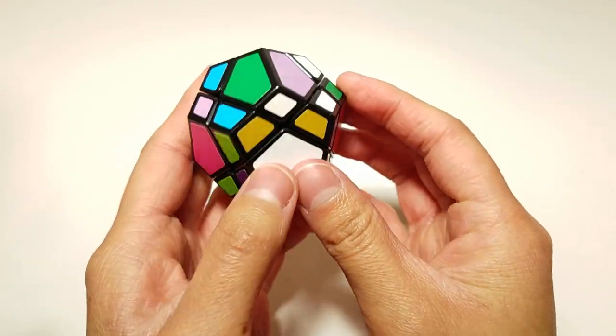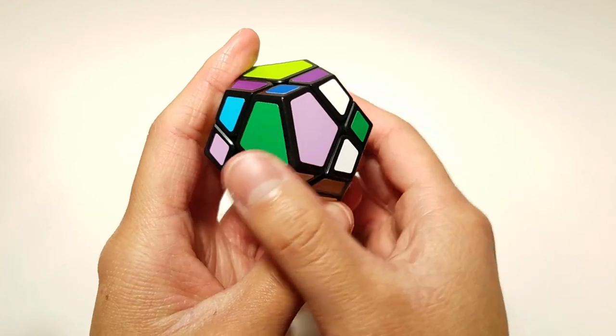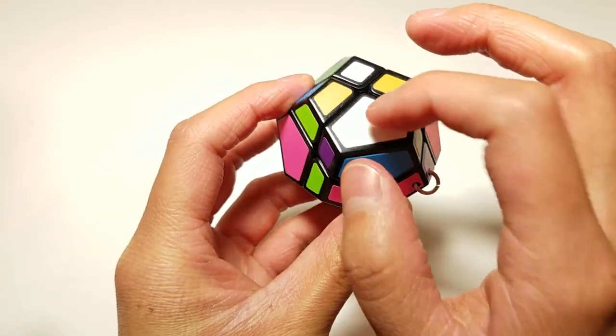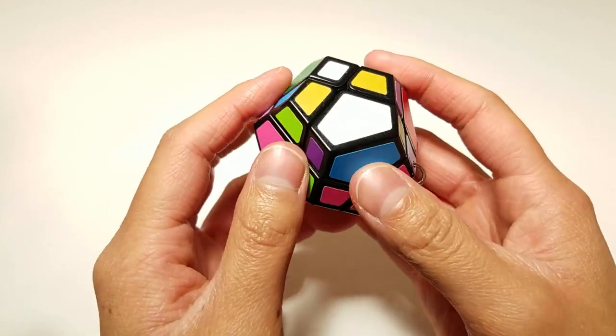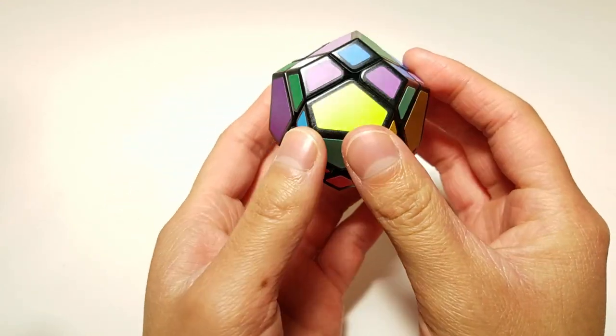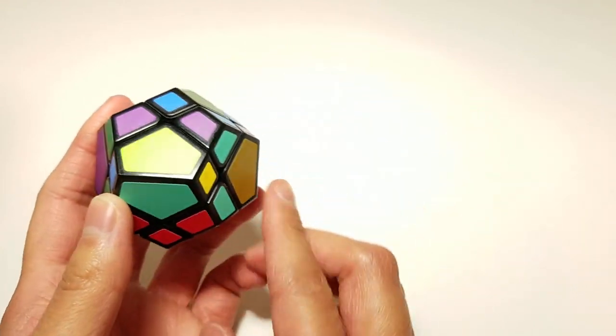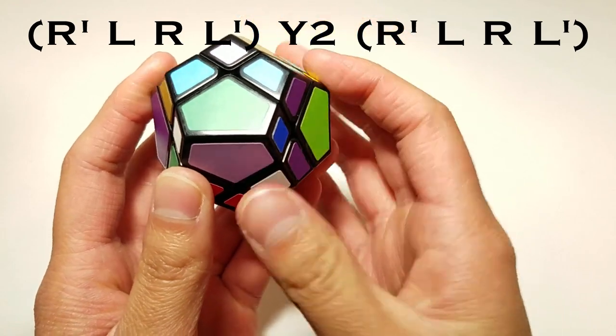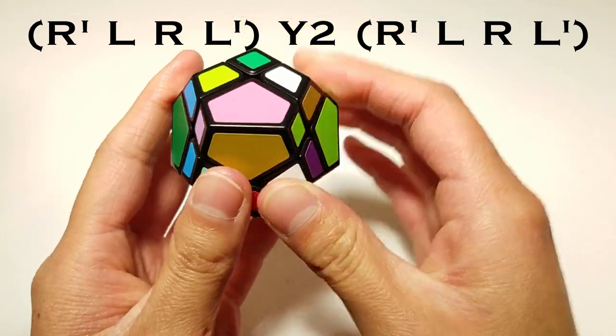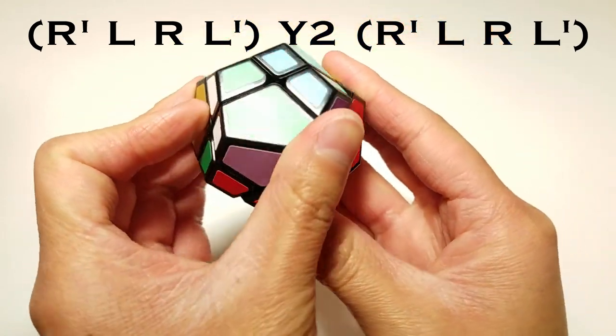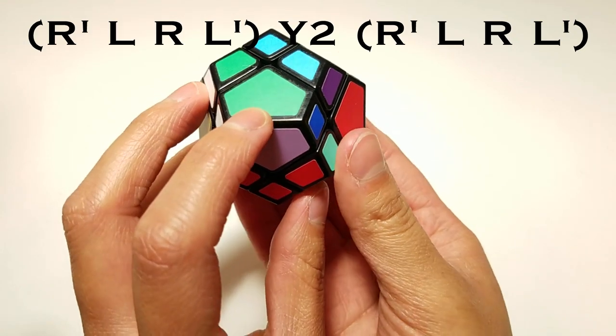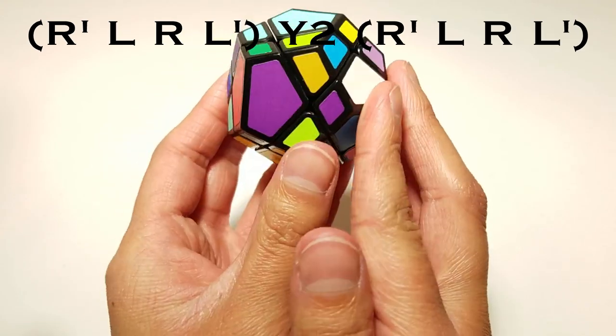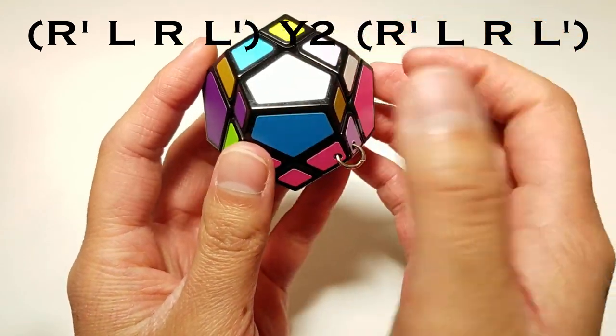And now all of your corners should be solved. Now in order to bring this center, because that's the one we need up here, we just put it in the back. And then do that same algorithm, but you need to do it twice. So halfway, turn it 180 degrees with the Meffert's center still facing down. And then do it again.